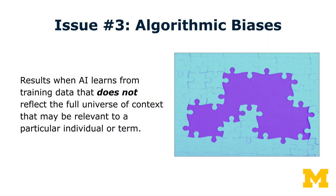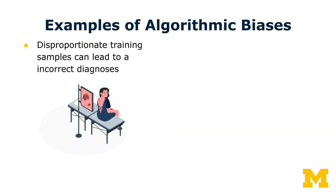Another area of concern for the trustworthiness of AI output has to do with algorithmic biases. As artificial intelligence learns from training data, it may learn from a subset that does not reflect the full universe of context relevant to a particular individual or term. For example, if an AI model is trained to identify which skin images are indicative of melanoma, the model may misestimate the prevalence of melanoma if too many of the pictures it's trained on are cancerous compared to the true population — resulting in a diagnostic misidentification.